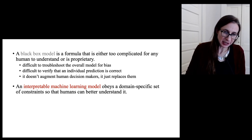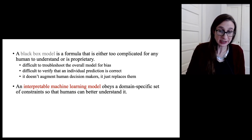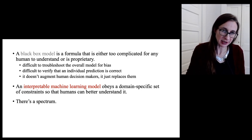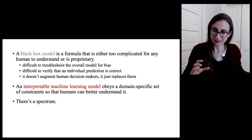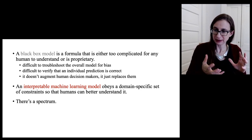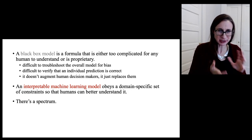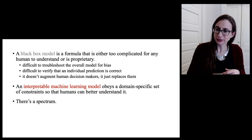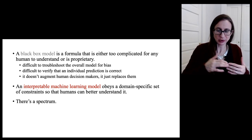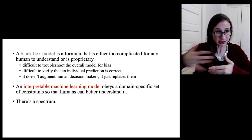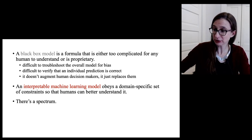An interpretable machine learning model, on the other hand, obeys a domain-specific set of constraints so that humans can better understand it. There's a spectrum between models that are fully interpretable — where you can understand how all the variables are jointly related to each other, like a simple scoring system — to models that are loosely constrained, where for instance the predictions might increase as one variable increases.